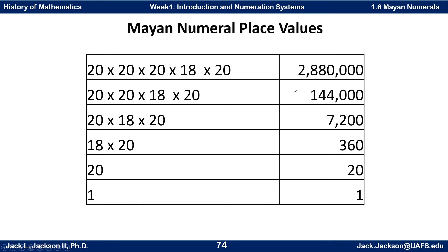And twenty of those makes two million eight hundred eighty thousand. So you can get up to pretty high numbers a little faster than you can with the smaller base of ten that we use. You can reach larger numbers with fewer digits.